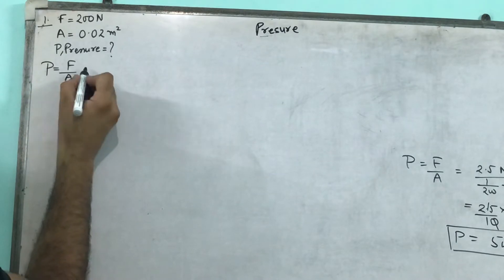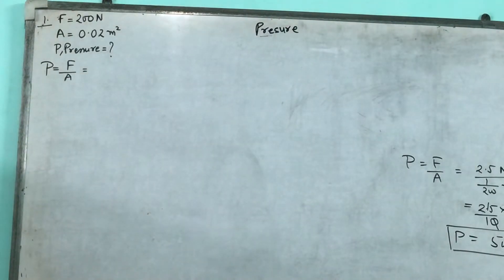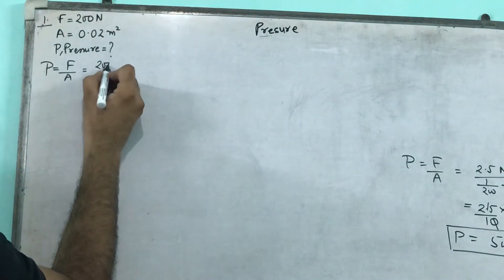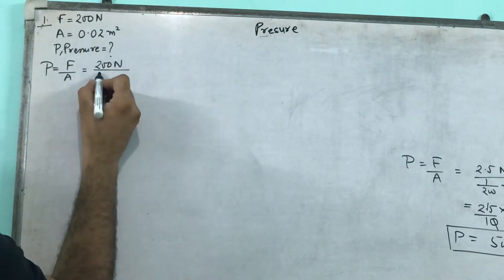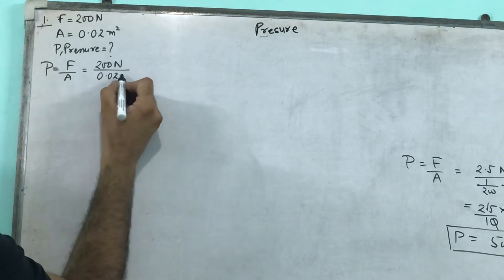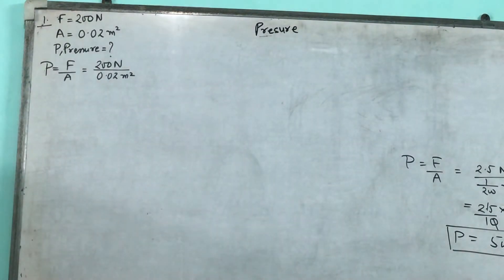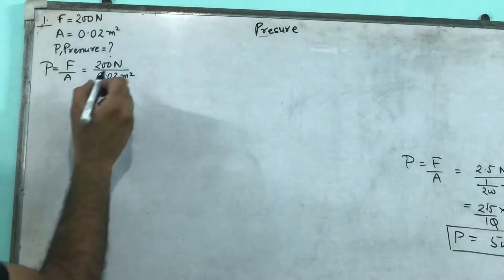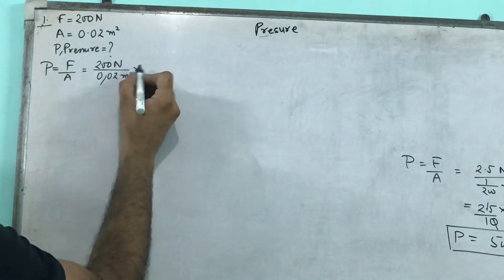Pressure is equal to F upon A. Pressure is equal to force upon area. Force is 200 newton, area is equal to 0.02 meters square. The rest is your simple numerical skills. If you have to take the point from 100...